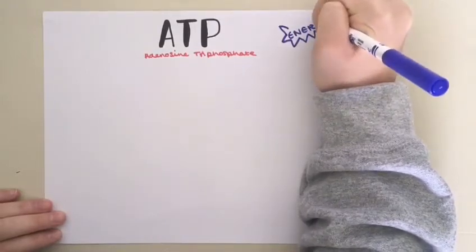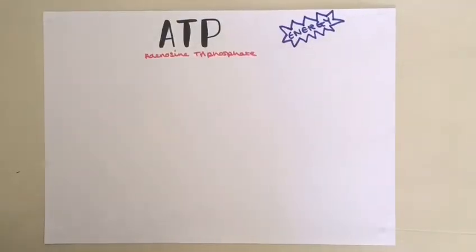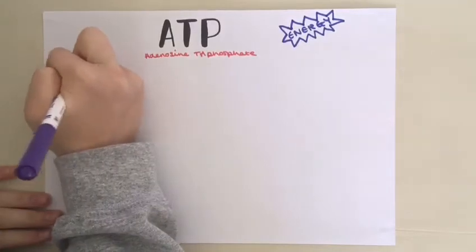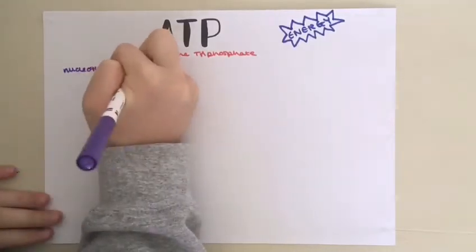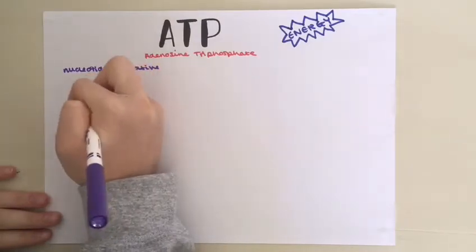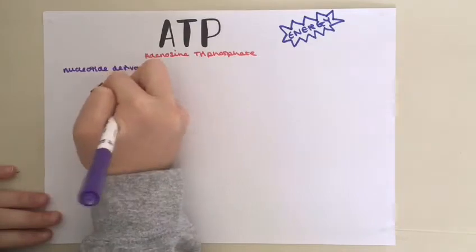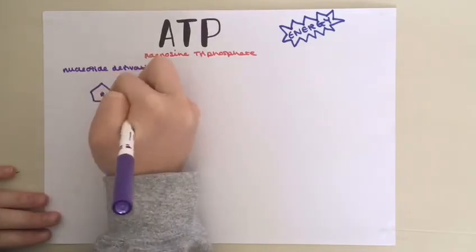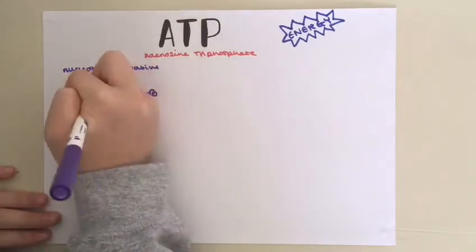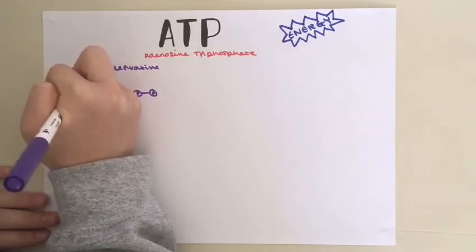It is a nucleotide derivative because it is a modified form of a nucleotide. It has three components: ribose sugar, which is a pentose sugar also found in RNA, three phosphate groups all joined together here, and the organic base adenine, which is found in DNA and RNA.